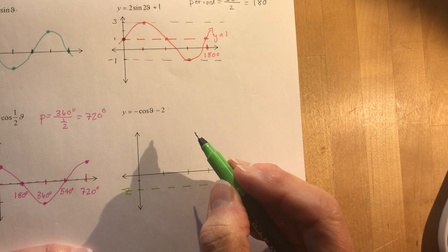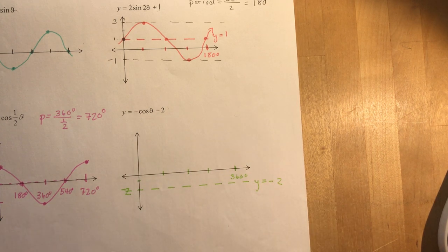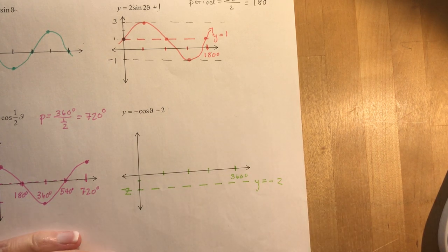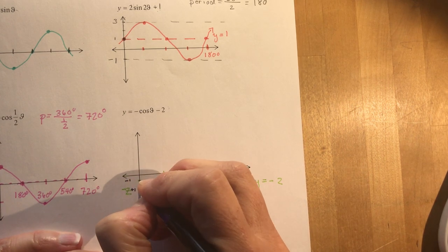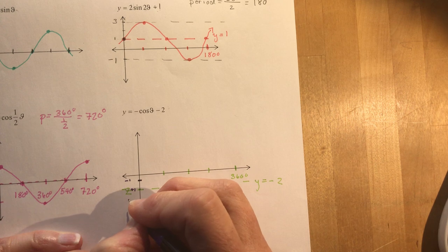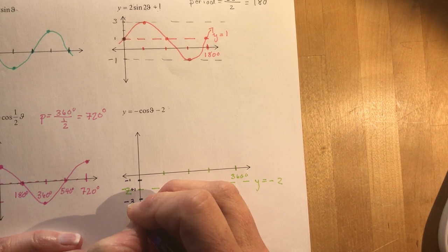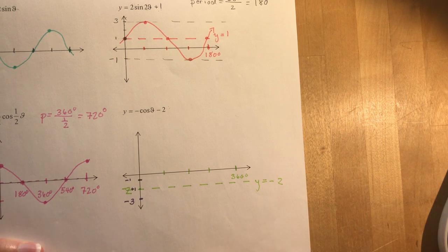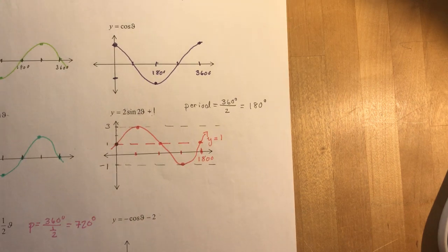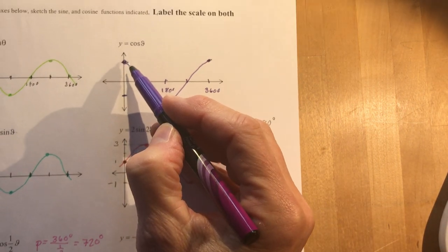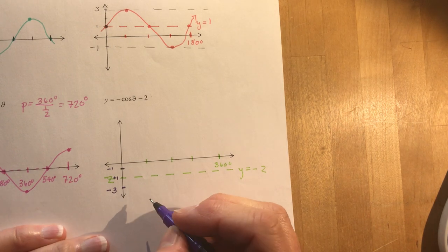So it's a negative cosine function. So here we go to minus one starting at minus two. So from minus two I add and subtract the amplitude which is one. So that goes to minus one, and I subtract one. So minus two minus one, this is going to be minus three.